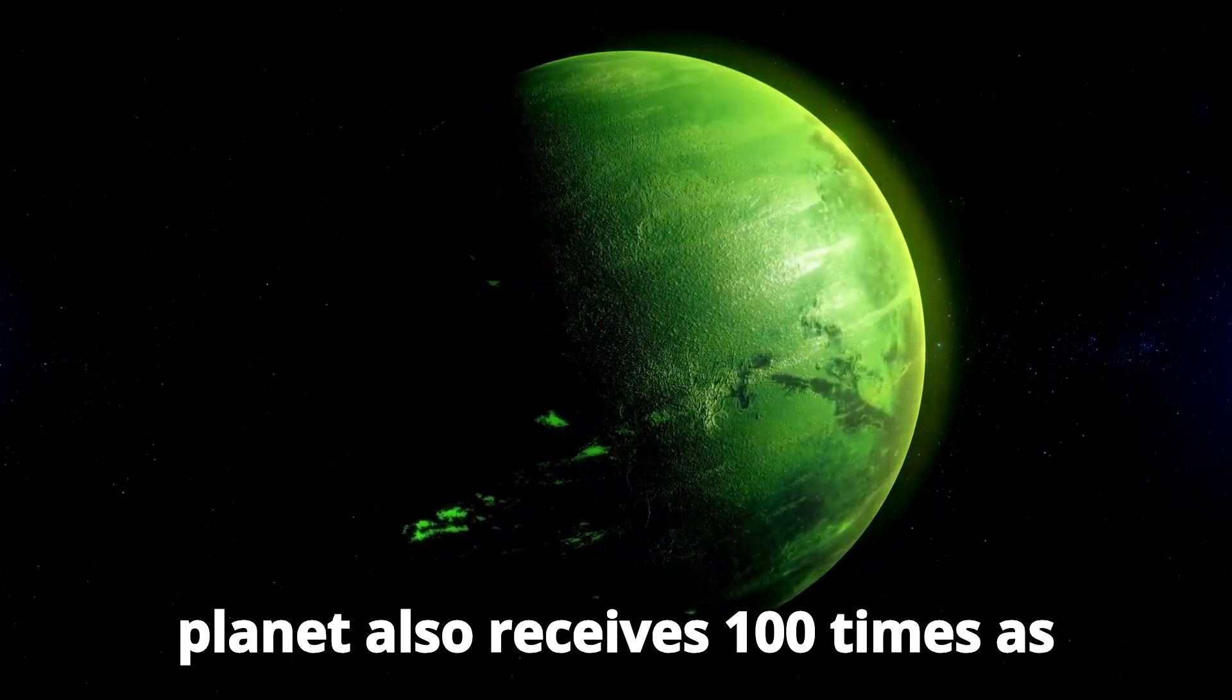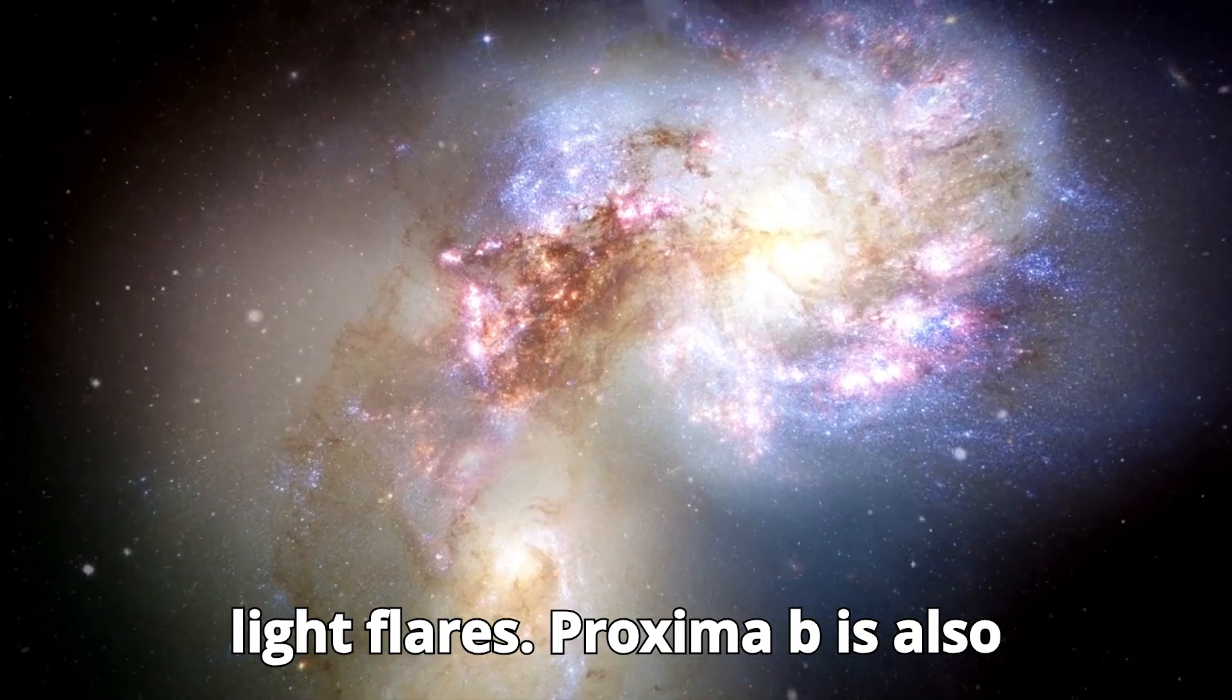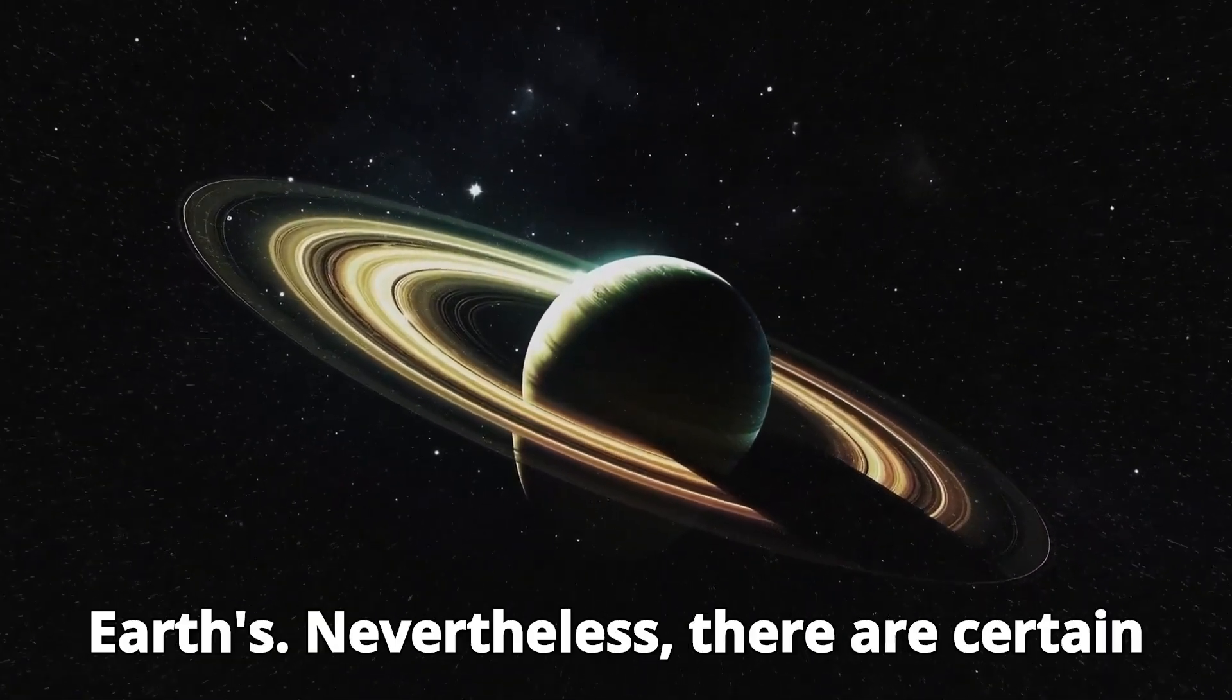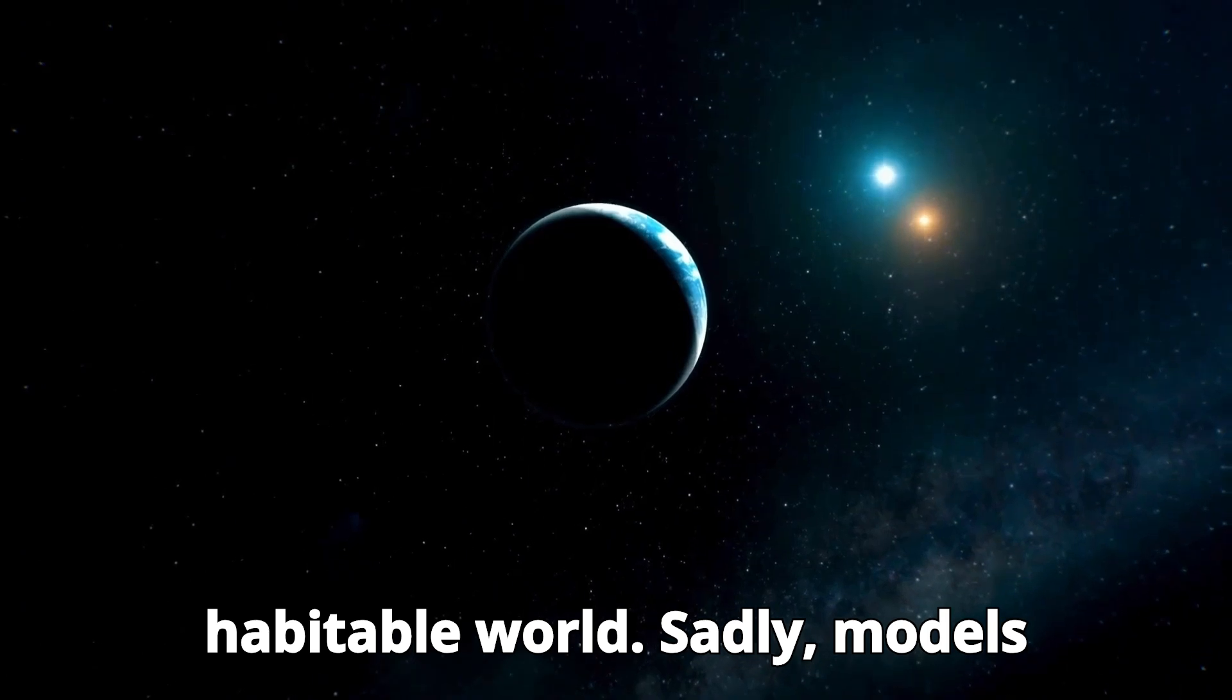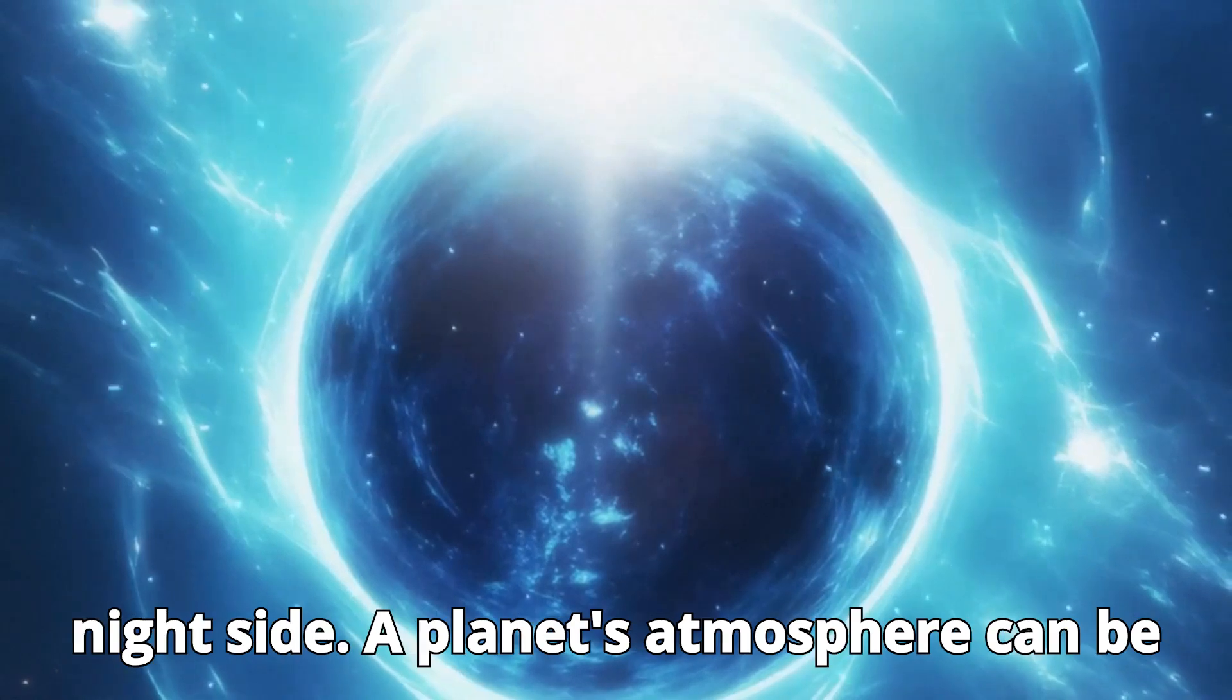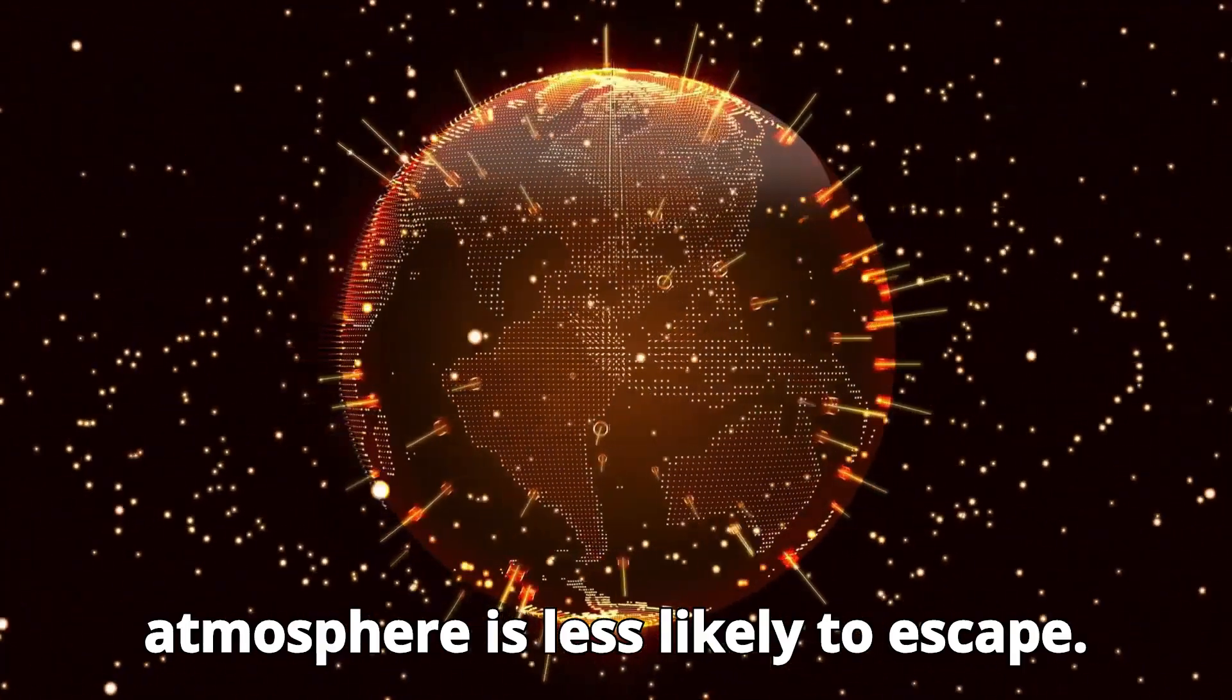The planet also receives 100 times as much high-energy radiation as Earth does because of its proximity to Proxima Centauri, including X-rays and bright light flares. Proxima b is also bombarded with high-energy particles during star flare-ups unless it has a shielding magnetic field, similar to Earth's. Nevertheless, there are certain realistic conditions that could make it a habitable world. Sadly, models suggest that the atmosphere of tidally locked planets may be susceptible to a rapid collapse because of the freezing out of unstable gases on the night side. A planet's atmosphere can be replenished by volcanic activity, and for planets with strong magnetic fields, this atmosphere is less likely to escape.